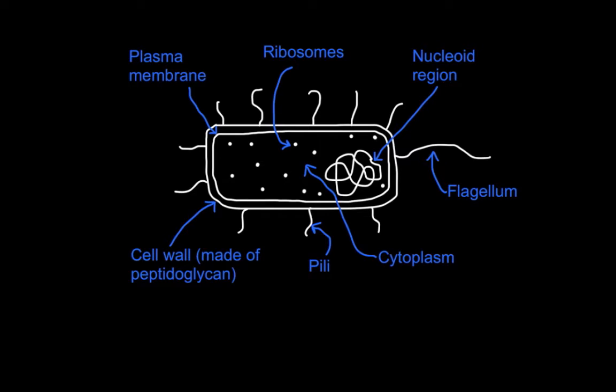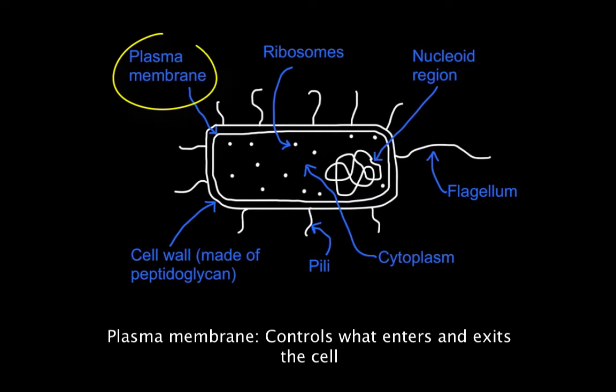Prokaryotes have a simple cellular structure. They have a plasma membrane which controls what enters and exits the cell.